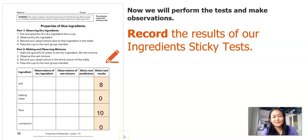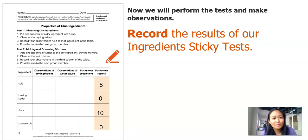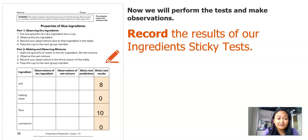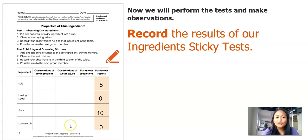Now would be a good time to record the results that you saw on my sticky test. I recorded it on the very last column of our chart. You can also use a piece of paper if that's easier. Salt had eight left, baking soda was zero, flour was 10, and cornstarch was zero.